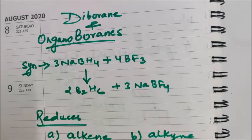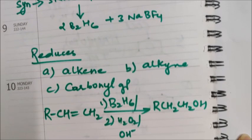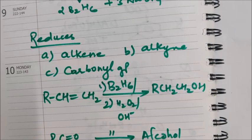Good morning class. Welcome to Full Syllabus Channel. Today we will be doing diborane and organoboranes as reducing agents. The synthesis of diborane is by sodium borohydride — sodium borohydride is reacted with boron trifluoride and it forms diborane. It basically reduces alkene, alkyne, and carbonyl groups, and gives various reactions such as isomerization and carbonylation, which I will be dealing with today.